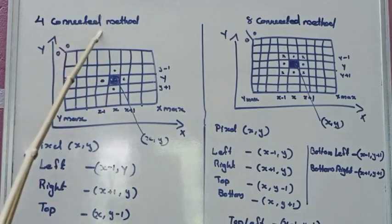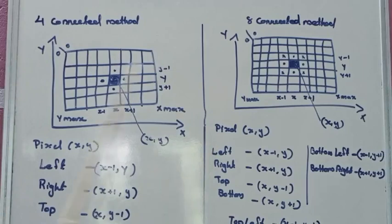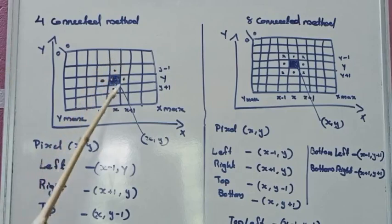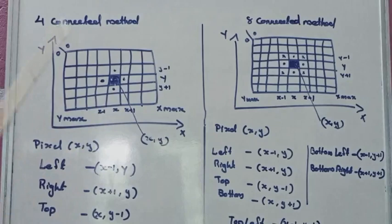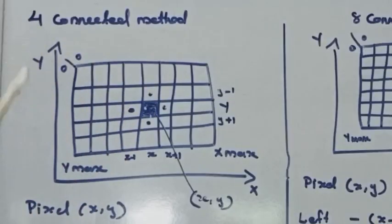The method is called the 4-connected method or 8-connected method. We will use the 4-connected method for one color set, and the 8-connected method for all colors. We will choose the same method we have. We will choose the same color in each pixel for the total region using the 4-connected method.